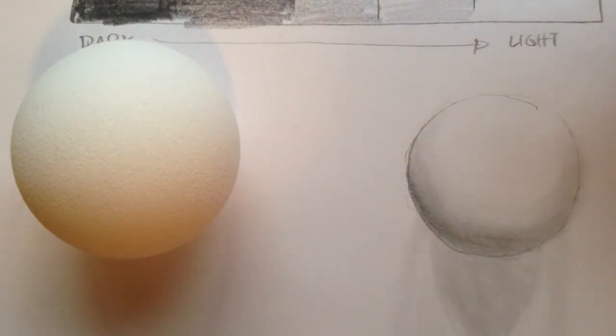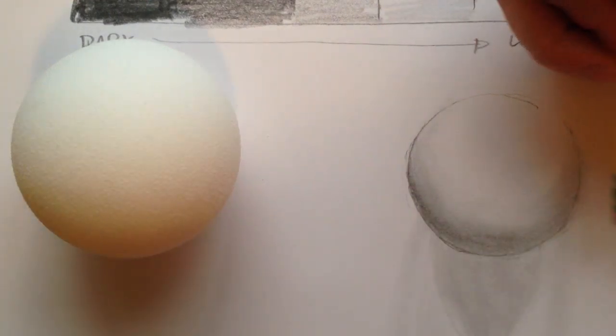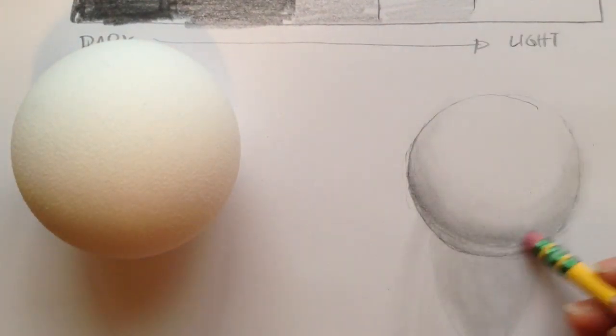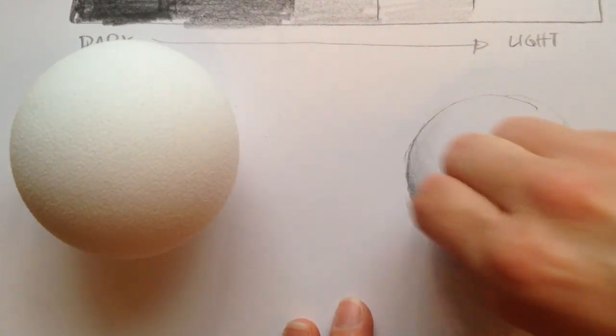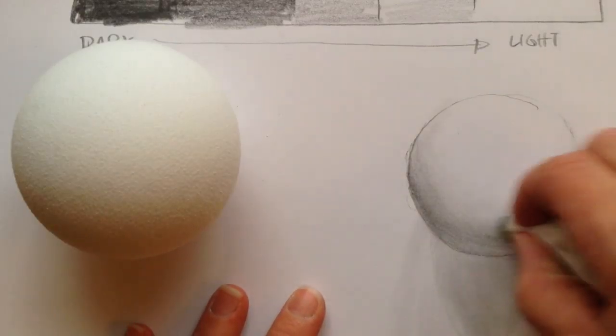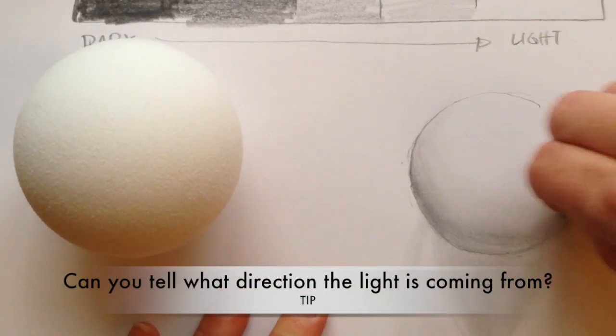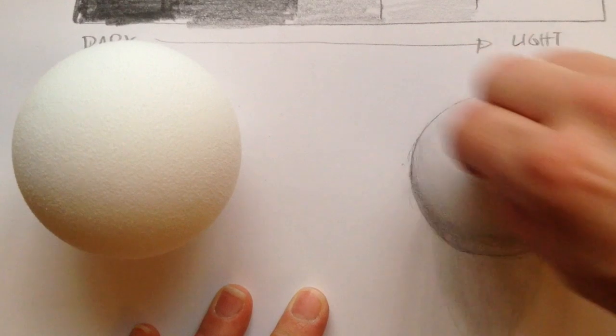Now I can see the reflected light kind of got smudged out in here, so I'm just going to use my eraser and erase out some of that reflected light. And after I erase it, I'm just going to try to blend next to it again. You can look at yours—this shadow I think needs to come up a little bit more around to my sphere.